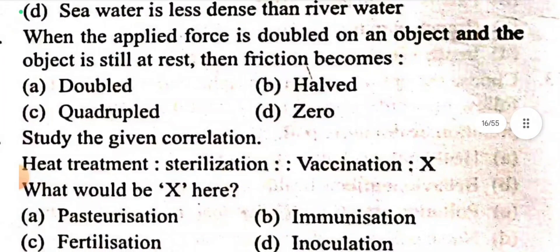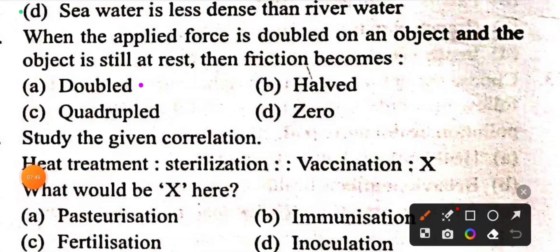Question 95: When the force applied is doubled on an object and the object is still at rest, then the friction becomes doubled.